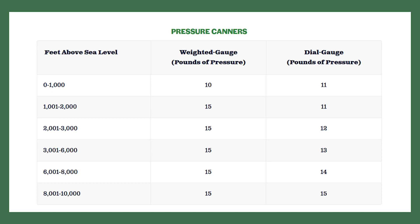Looking at this guide: from zero to one thousand feet, a weighted gauge uses 10 pounds and a dial gauge uses 11 pounds. At 1,000 feet or more, weighted gauge canners jump to 15 pounds and stay there all the way to 10,000 feet. But dial gauge canners are still at 11 pounds between 1,000 and 2,000 feet, and gradually increase — 11, 12, 13, 14, 15 — not reaching 15 until 8,000 feet. There is definitely a difference.